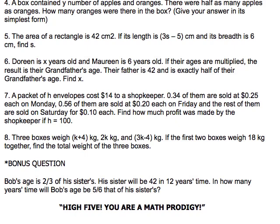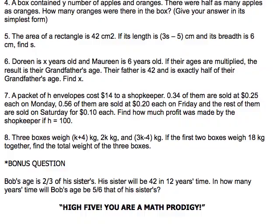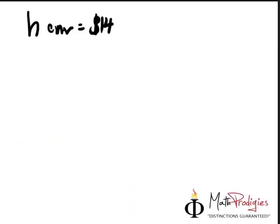Question number 7. A packet of H envelopes cost $14 to a shopkeeper. So let's write it down. H envelopes equals $14 to a shopkeeper. Let's read on. 0.34 of them are sold at $0.25 each on Monday.